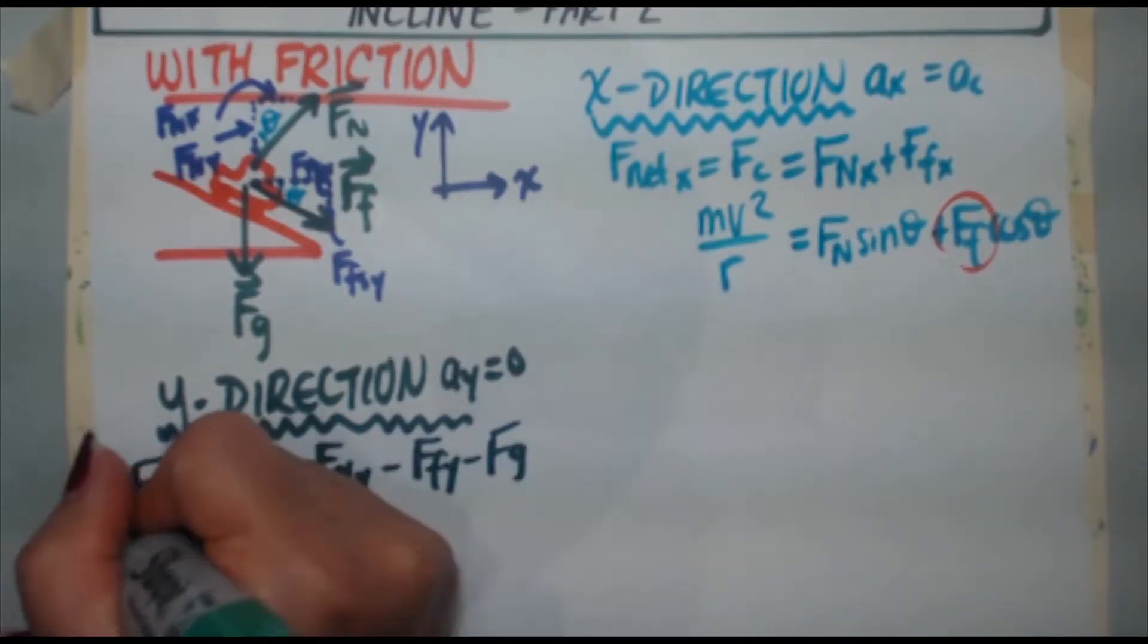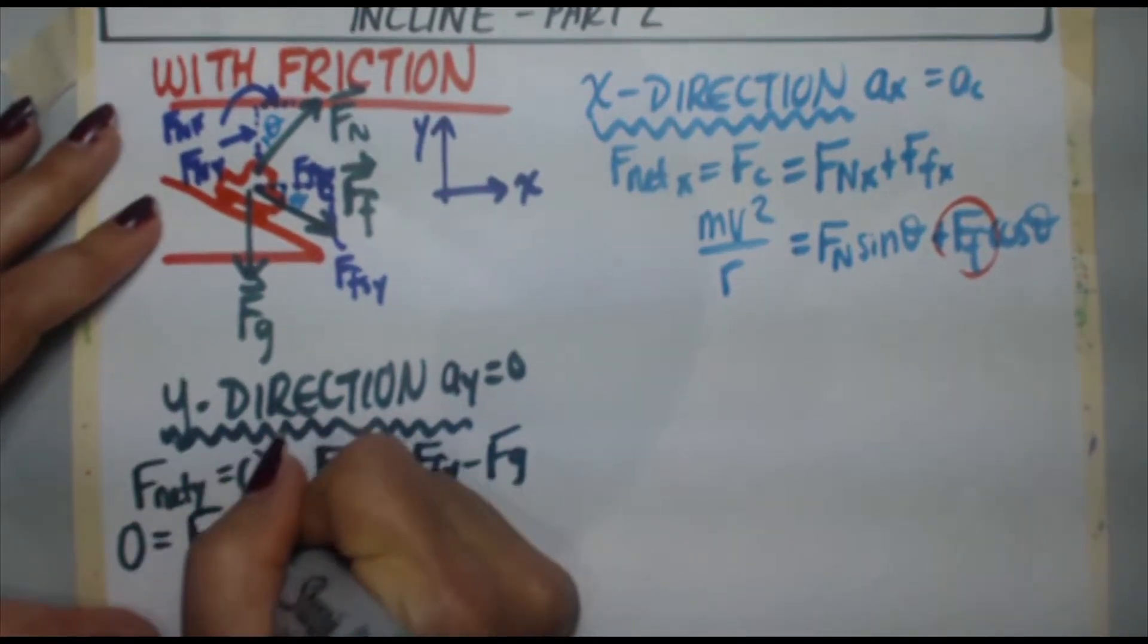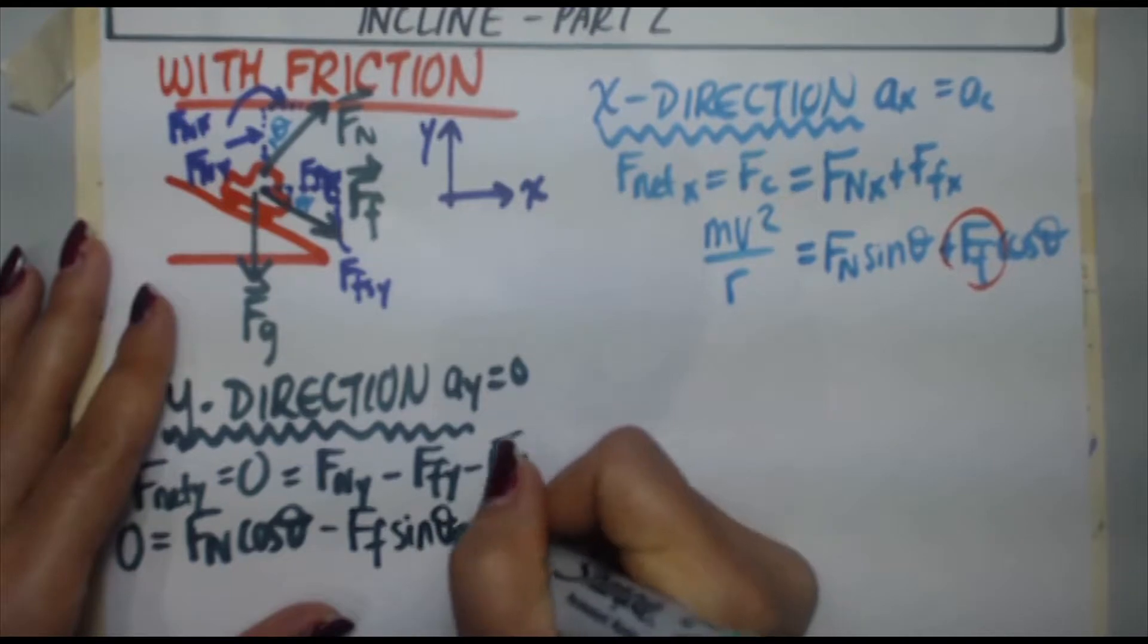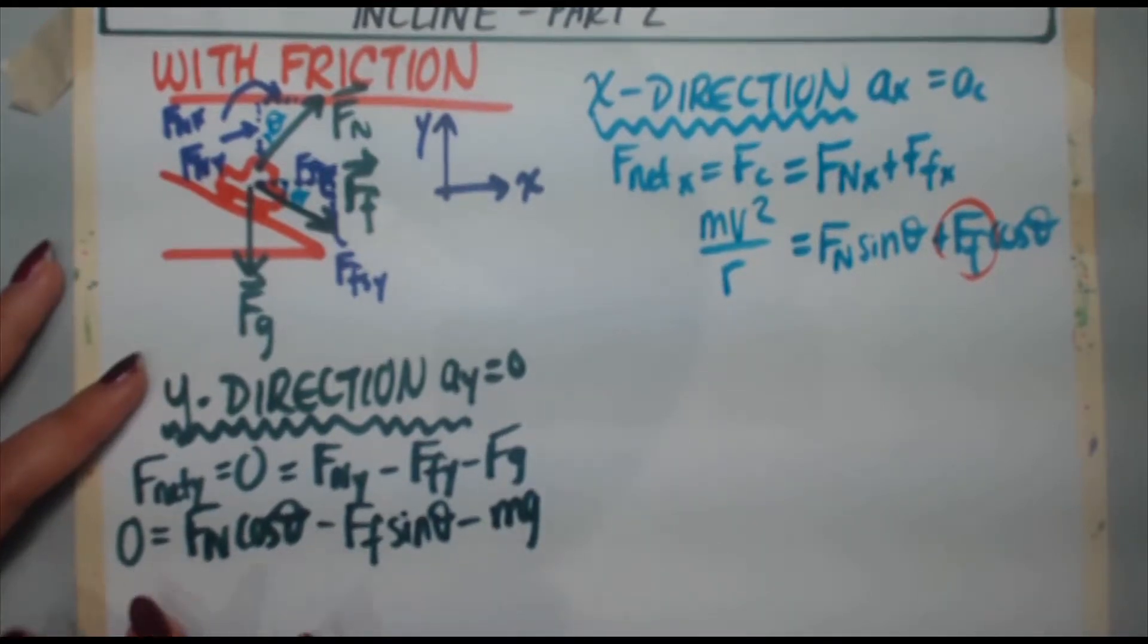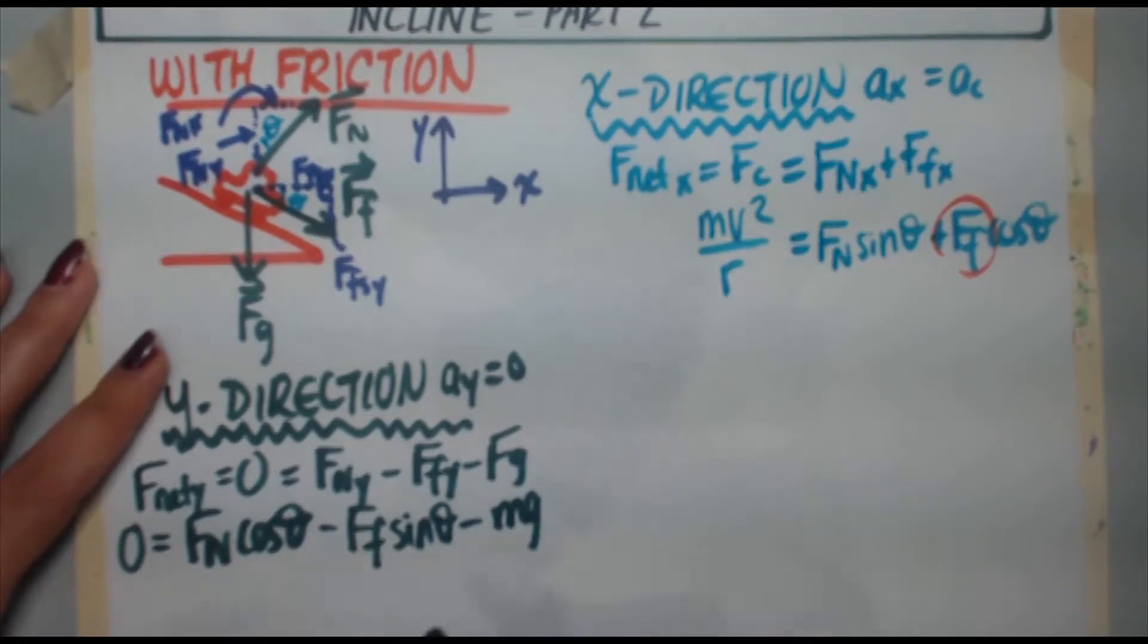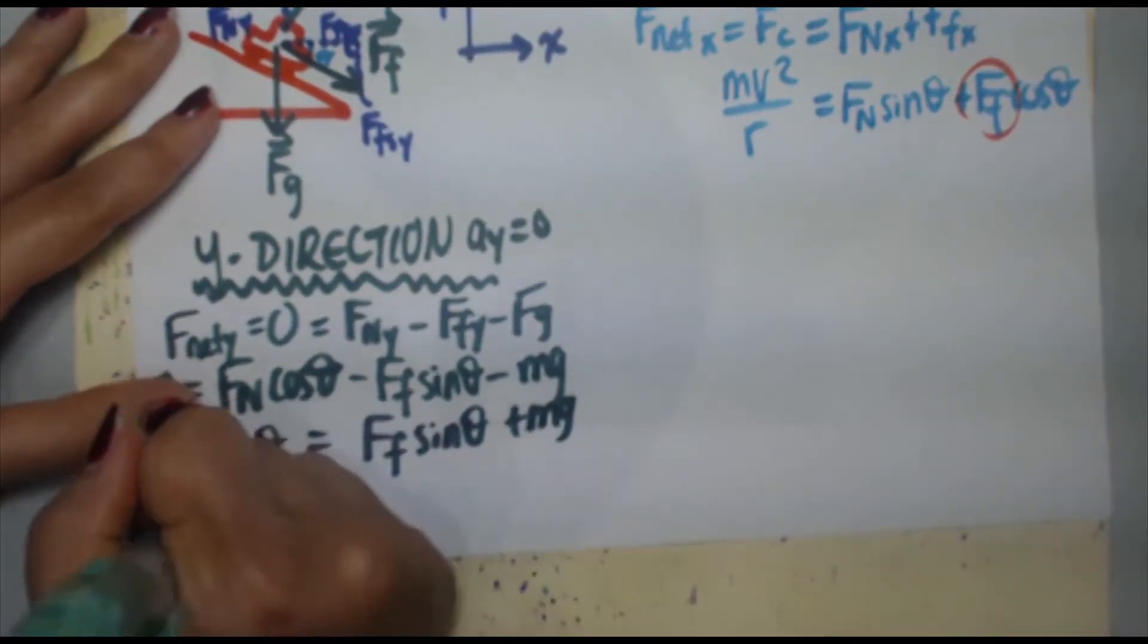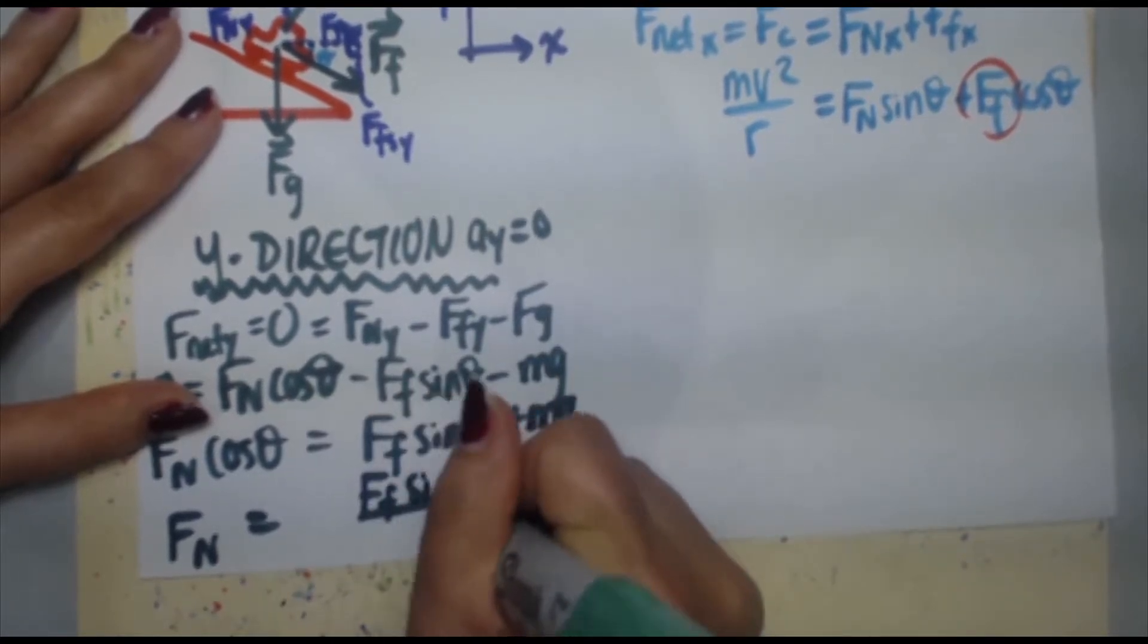Let's rewrite that again. Zero equals Fn y is simply Fn cosine of theta. Force of friction in the y direction is Ff times sine theta. So minus Ff sine theta minus mg. I want to get Fn by itself. Let's take these two negative expressions and bring them to the left. So Fn cosine theta equals Ff sine theta plus mg. Therefore, Fn is equal to Ff sine theta plus mg divided by cosine theta.